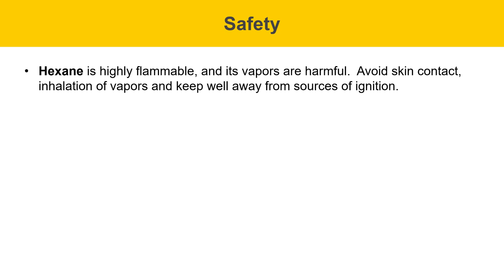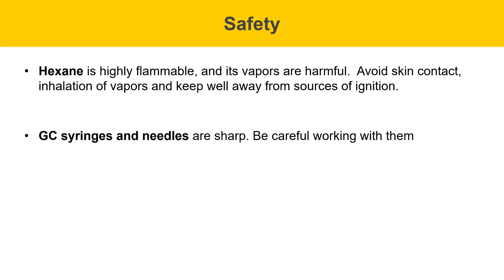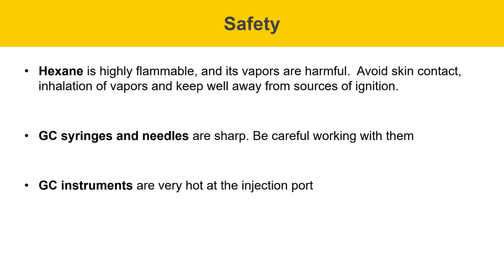Some safety items for this experiment are described on this slide. Hexane is highly flammable and its vapors are harmful, so you should avoid skin contact, inhalation of vapors, and keep this well away from sources of ignition. GC syringes and needles are sharp, so you'll need to be careful with those. The GC instruments are very hot at their injection port, and I'll point out where that is, so you should avoid touching that.